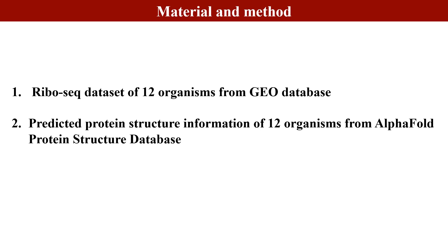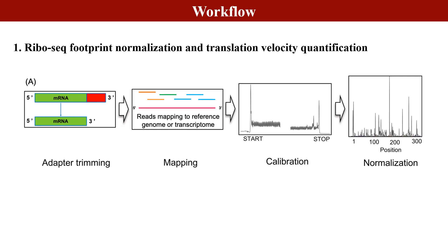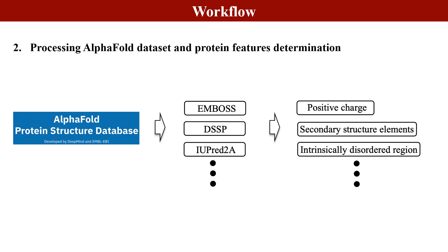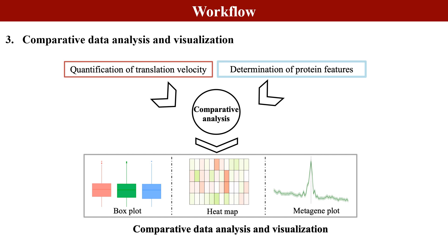The Ribo-Seq data for 12 organisms were downloaded from the GEO database, and predicted protein structure information for 12 organisms were downloaded from the AlphaFold protein structure database. The pipeline of our analysis mainly includes three steps: first, Ribo-Seq footprint normalization and translation velocity quantification; second, processing AlphaFold data and protein feature determination; and third, conducting comparative data analysis and visualization.